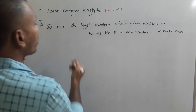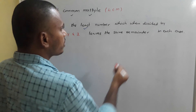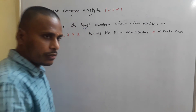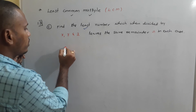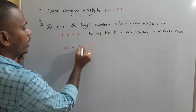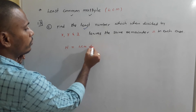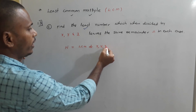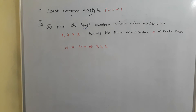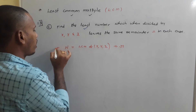Generalization: find the least number which when divided by x, y, and z leaves the same remainder r in each case. The required answer N is simply LCM(x, y, z) + r.